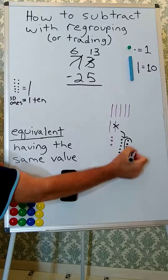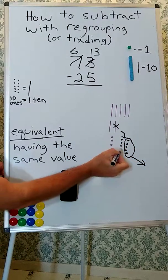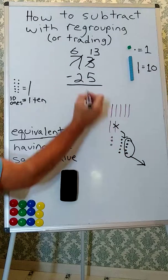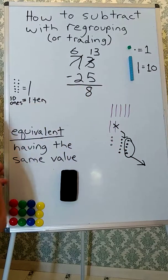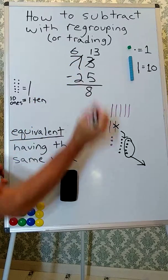So we take 5 ones away, and we're left with 8 ones. And now we're going to take away the 2 tens.